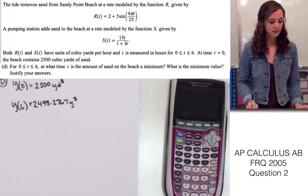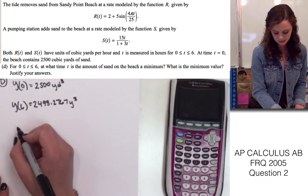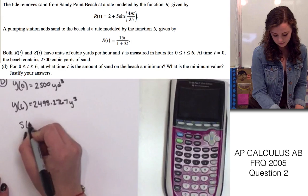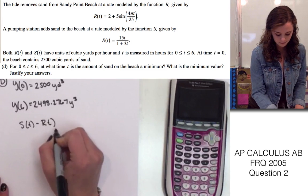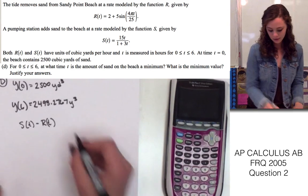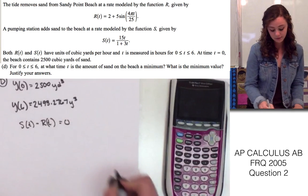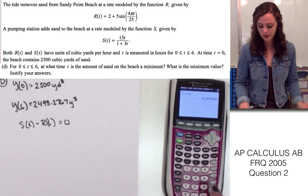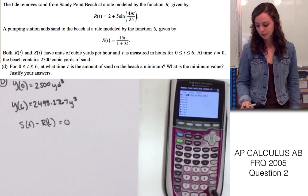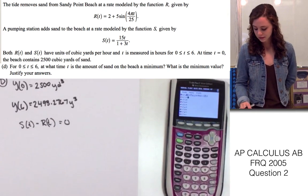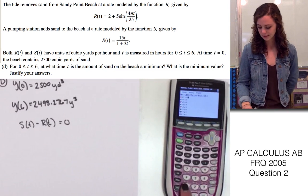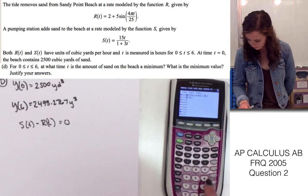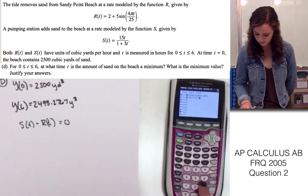To find the critical number, we need to take the derivative of y of t. That is going to end up to being s of t minus r of t. We're going to have to set this equal to 0 to find the critical numbers. And in order to find the critical numbers, we're going to have to use our calculator. We already have r of t plugged in for equation 1. For equation 2, let's go ahead and put in s of t. So, 15x over 1 plus 3x.